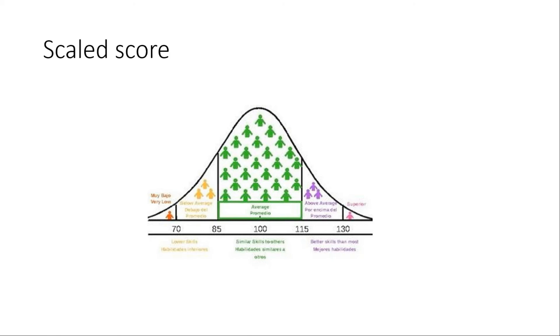A scaled score - these are used in some tests. The CELF-5, the speech pathologist assessment of speech and language, often uses this one. So instead of the mean being 100, the mean is now 10, and anything between 8 and 12 is considered in the average range.